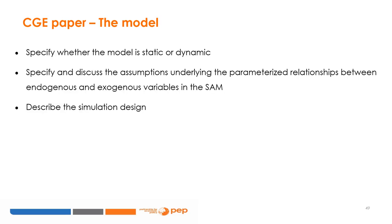The CGE model explicitly simulates the behavior of every actor represented in a SAM. It specifies a parameterization of the relationships described in a SAM. Therefore, in describing your CGE model, specify whether the model is static or dynamic, discuss the assumptions underlying the parameterized relationship between endogenous and exogenous variables — are production functions Cobb-Douglas, CES, or Leontief? Are products homogenous or differentiated? And describe the simulation design: what are the main behaviors simulated by the CGE?